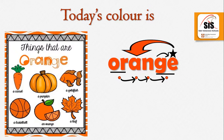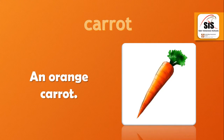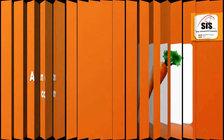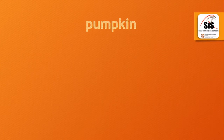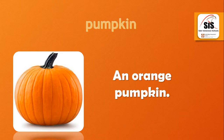Let's see things that are in an orange color. First one: Carrot. An orange Carrot. Next one: Pumpkin. An orange Pumpkin.